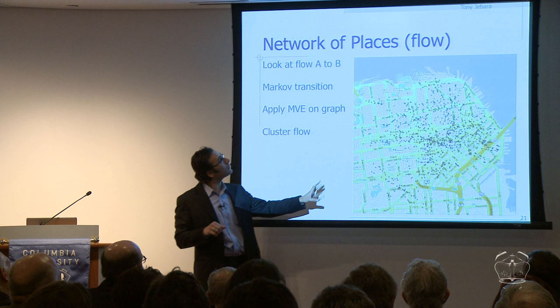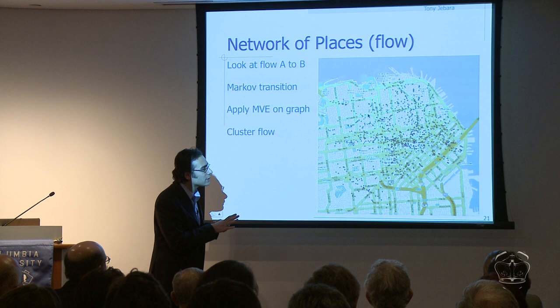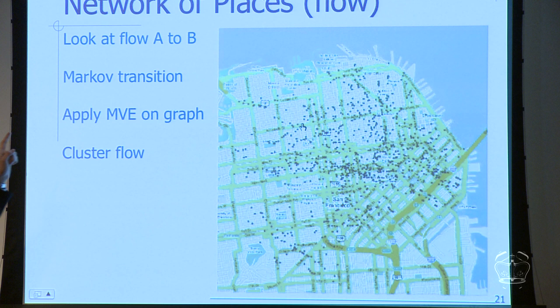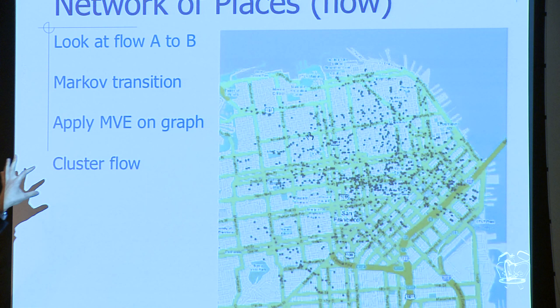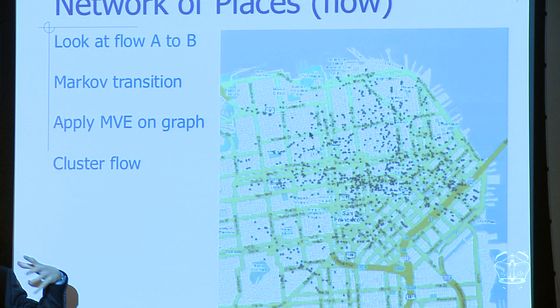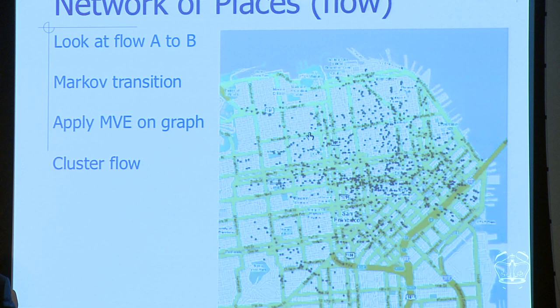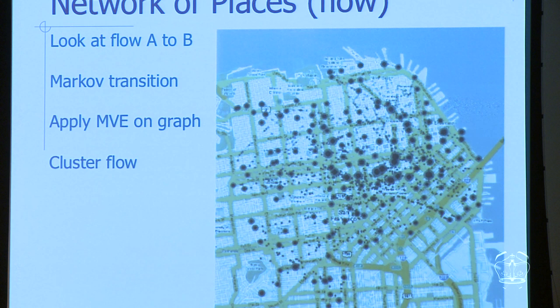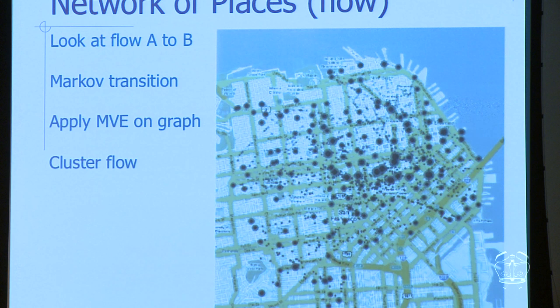Here's San Francisco — we're going to look at the flow of people from every place to every other place, just 200 places so it doesn't look like too much spaghetti. We look at the flow from A to B for all possible places — how do people move from A to B to C and so on? We build something called the Markov Transition Matrix, which is a big network or graph. Then we run the MVE algorithm on it to unfold it and present it in 2D. We look at the top 200 spots in the city based on flow, and we unfold the network, putting places that have similar inflow and outflow close to each other.